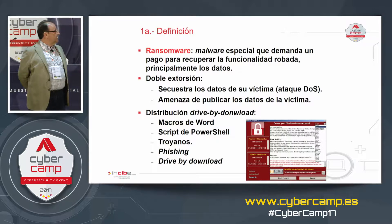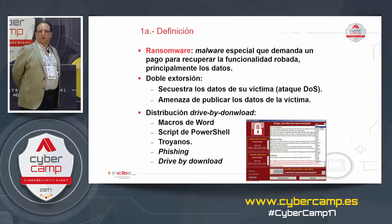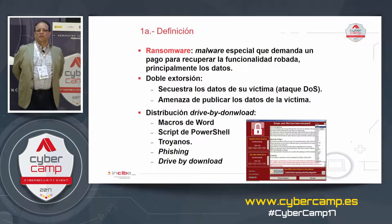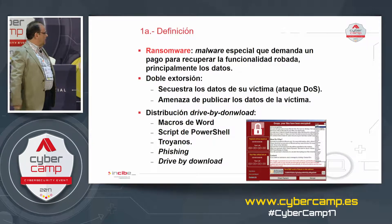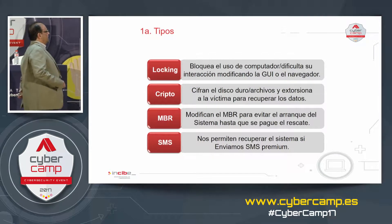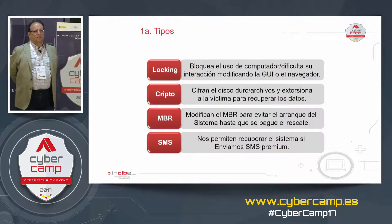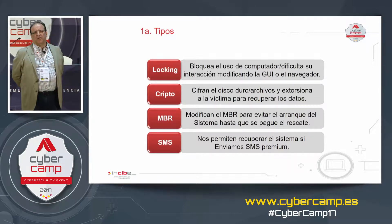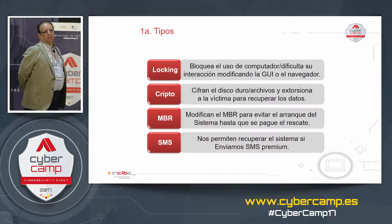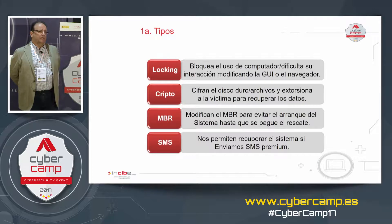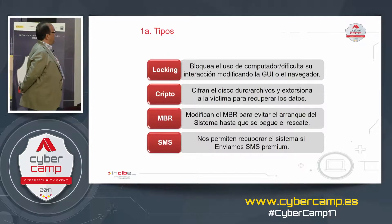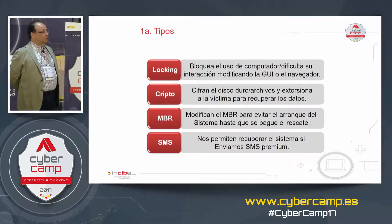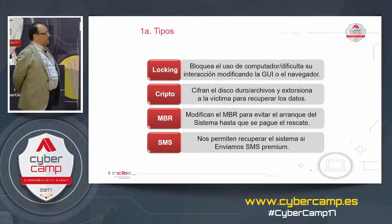Here you can see a typical ransomware screen requesting a ransom once data has been encrypted. Payment is usually required in Bitcoin to avoid tracking. There are different types of blocking — some are pretty easy to bypass — for example, blocking use of the computer by modifying the user interface. These are easier to bypass and don't generate serious problems.